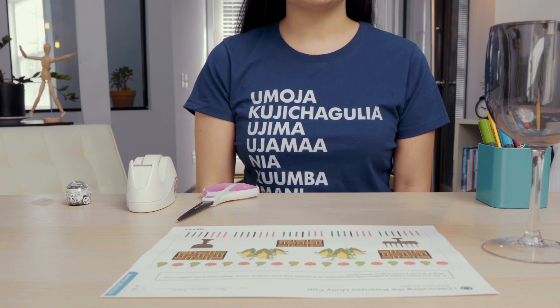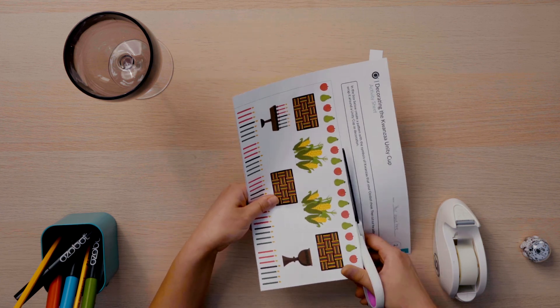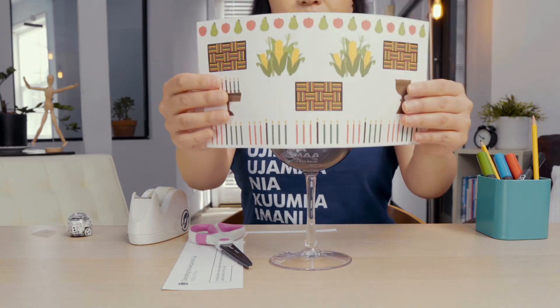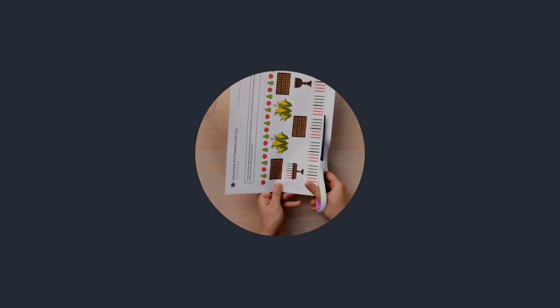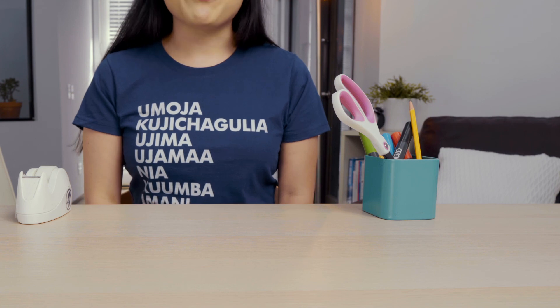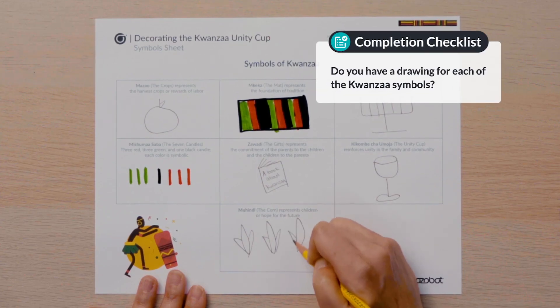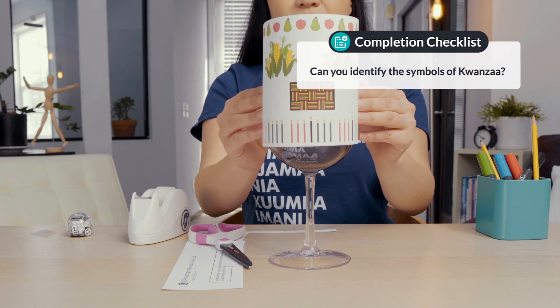Once you have completed your pattern, cut it out and wrap it around a goblet style cup as decoration. Can you cut out your illustrations and decorate your unity cup? That was a lot of work. Well done. Please be sure you have finished everything. Do you have a drawing for each of the Kwanzaa symbols? Did you complete the unity cup activity sheet? Can you identify the symbols of Kwanzaa? Come back again soon for our next lesson.